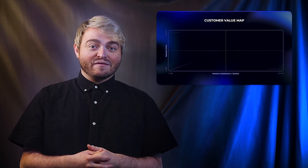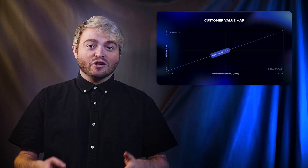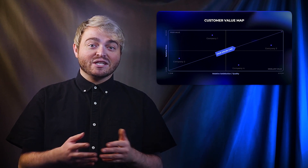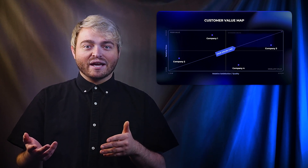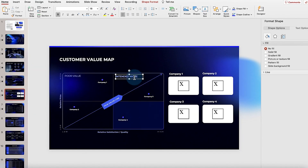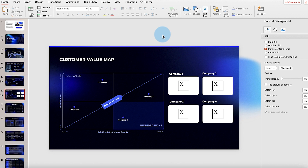Now, if a strategic pivot is needed and your intended niche needs to be modified, simply move the shaded quadrant to its new position.